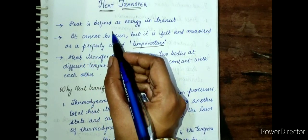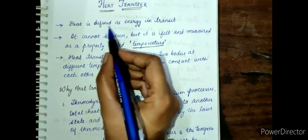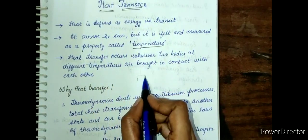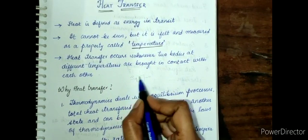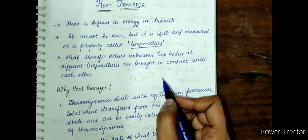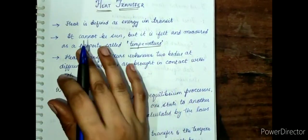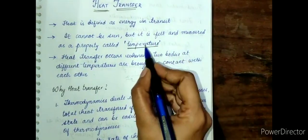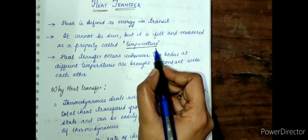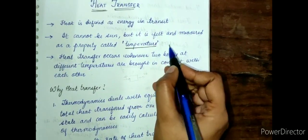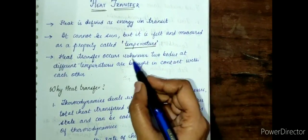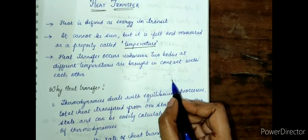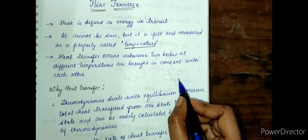First, we have a definition of heat. Heat means energy in transit — that means heat is energy that flows from one body to another. Its effect can be felt; by its effect, we will measure one of the properties — temperature. Heat transfer occurs whenever two bodies at different temperatures come into contact.